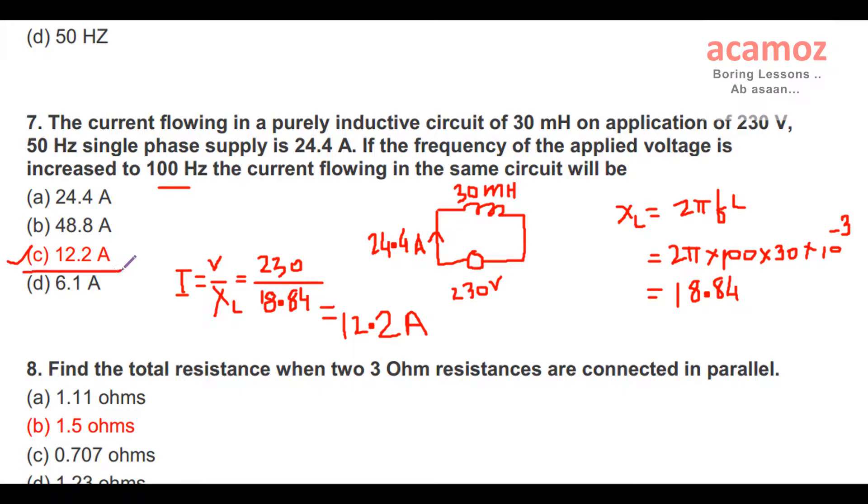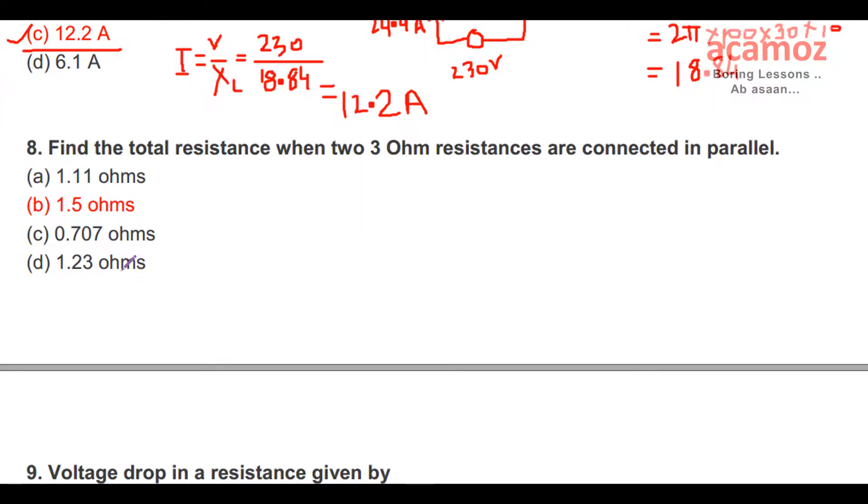Eighth question: Find the total resistance when two 3-ohm resistances are connected in parallel. If two 3-ohm resistances are connected in parallel, then the total resistance formula is R1 × R2 divided by R1 + R2. That is equal to 3 × 3 divided by 3 + 3, so 9 divided by 6, that is 1.5. Answer is 1.5 ohm.